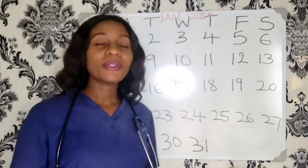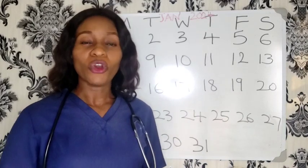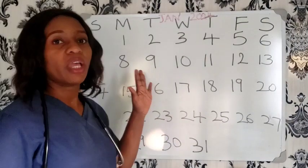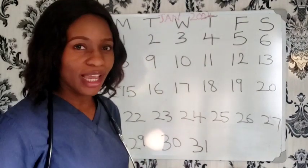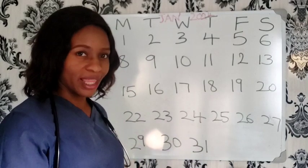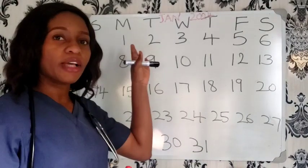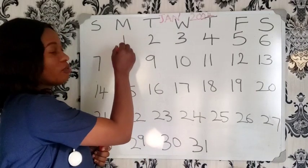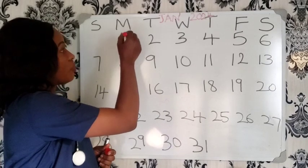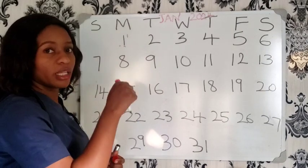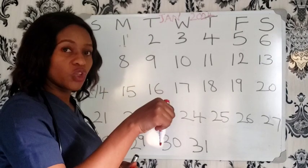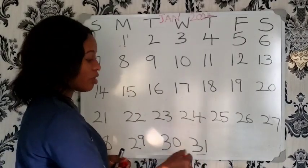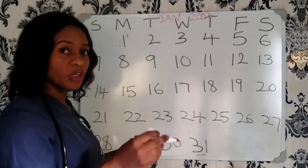I'm going to use a woman with a 30-day menstrual cycle to show you how to calculate safe days. Assuming she saw her menses and the first day was on the 1st of January — this becomes her day one. Her next menstrual period would be on the 31st of January, which means she has a 30-day menstrual cycle.